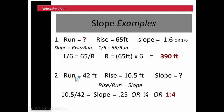Problem two is more straightforward — we're asked for the slope and are given both the run and the rise. We have 10.5 as the rise and 42 as the run. Dividing those out gives us 0.25. The slope can be stated as a fraction, decimal, or ratio — so 0.25, 1 over 4, and 1 to 4 are all the same slope for this rise and run.